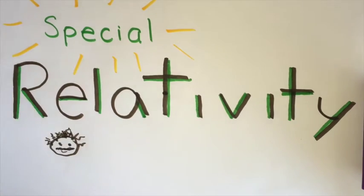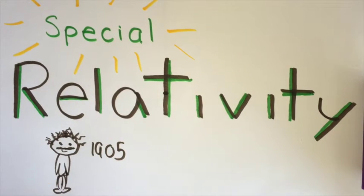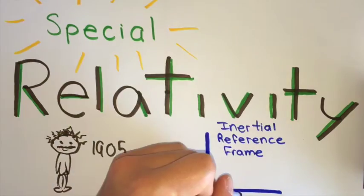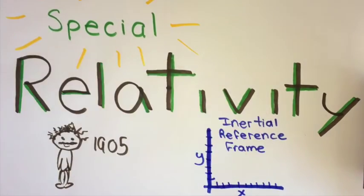Einstein, in 1905, published a revolutionary paper about this, and it has changed everything we know about space, time, and even matter. His work is all about how different reference frames moving in constant velocity relate to each other.